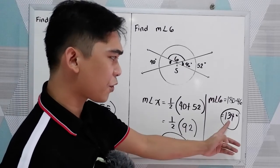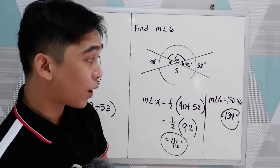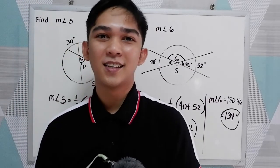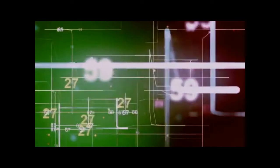So let us check. 134 plus 46, that is 180 degrees. Okay. That is our second theorem.